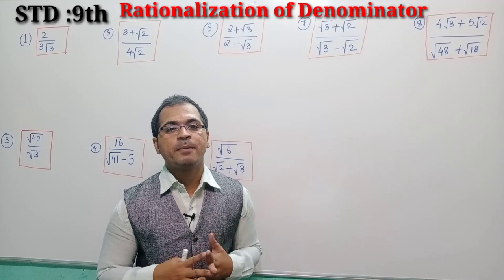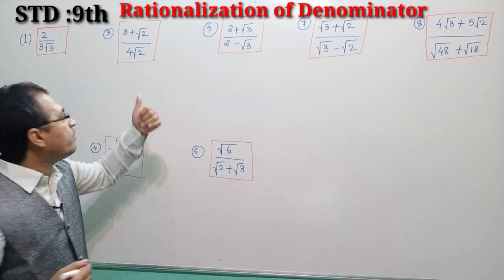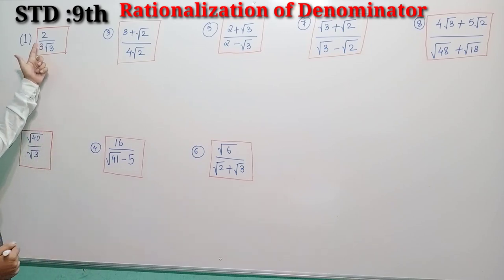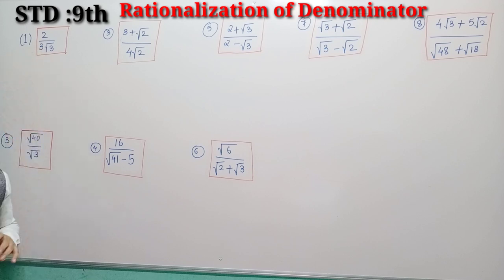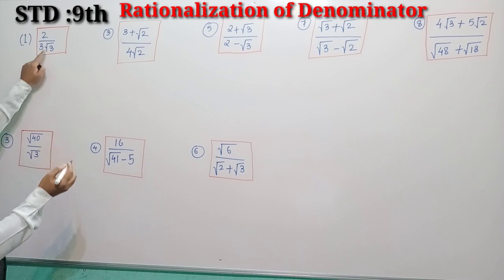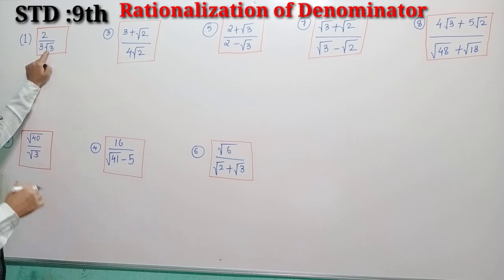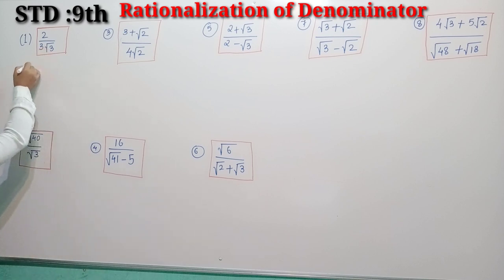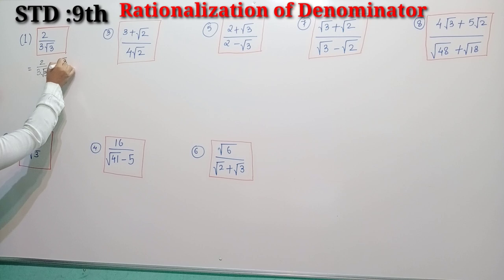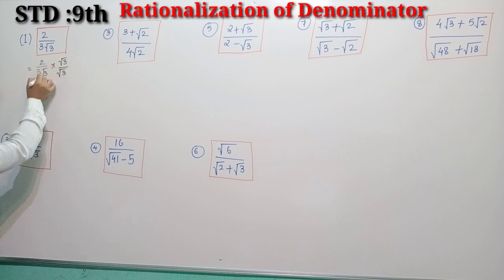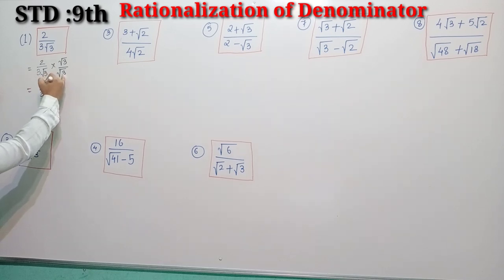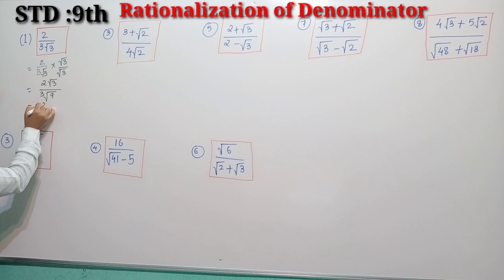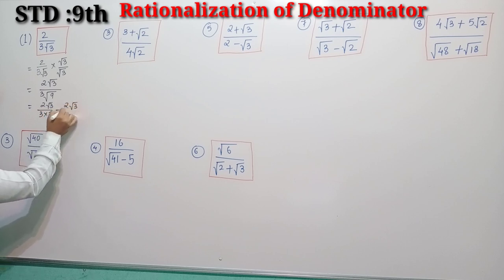We will now see all these steps with examples. In the first question we have the fraction in radical form: 2 by 3√3. You want to rationalize this term. Since √3 is in the denominator, there is no need to multiply by the conjugate of √3 — simply multiply by √3 over √3. So: 2√3 over 3 × √3×√3, which is √9 = 3. So 3 × 3 = 9, and you finally get 2√3 upon 9.